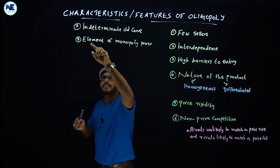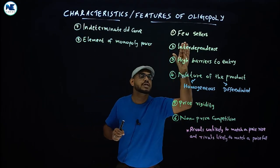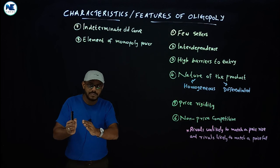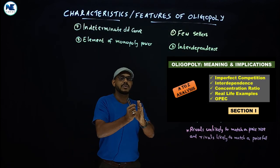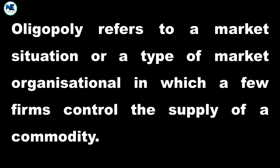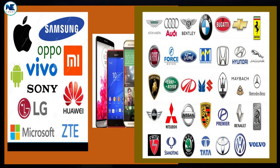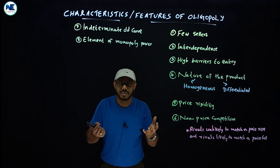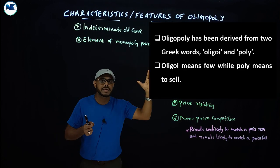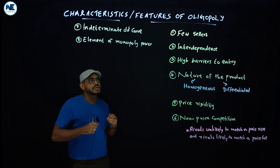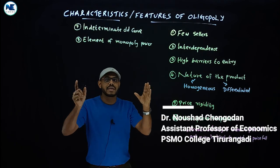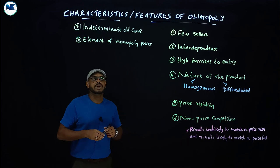Hello friends, let us start our topic: characteristics or features of oligopoly, a very important topic. We can expect a five-mark question on this. From the previous video, we know there are few firms or sellers who dominate the market. Real life examples include the automobile industry and cell phones. Oligopoly means few sellers — that is the keyword here.